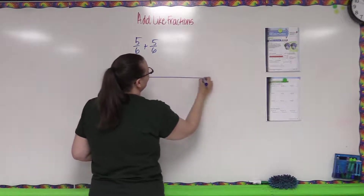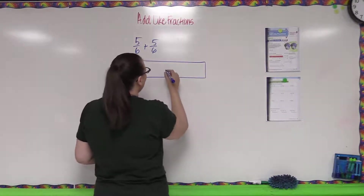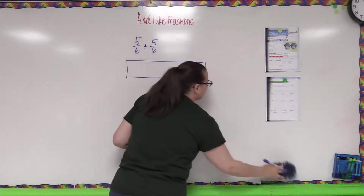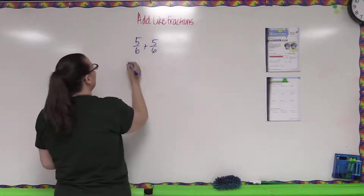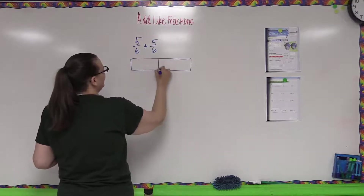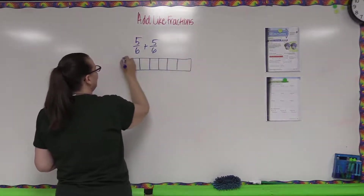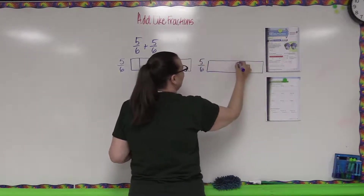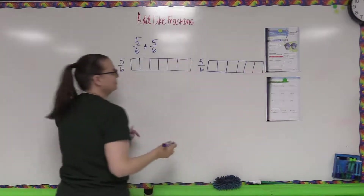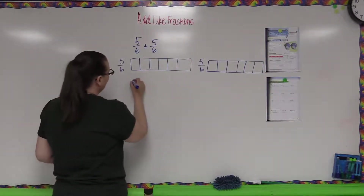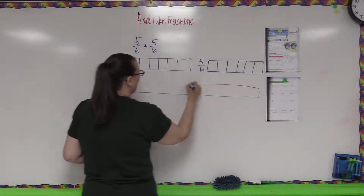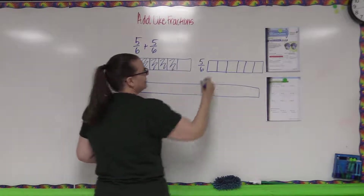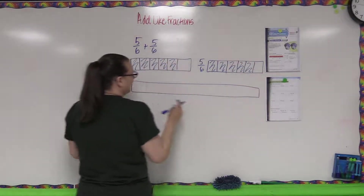One way to solve this is to use unit fraction tiles — set up a fraction bar. If we're talking about sixths, they're split up into six pieces. Here's the first fraction bar showing five-sixths, and here's a second one also divided into six pieces for the second five-sixths. We're going to combine them into one gigantic fraction bar. Five-sixths means five of those pieces are colored in.